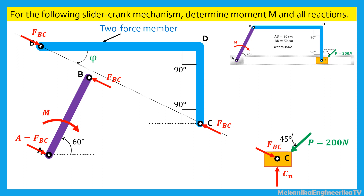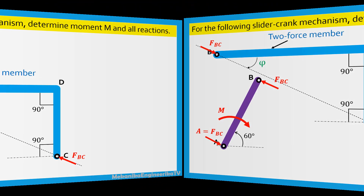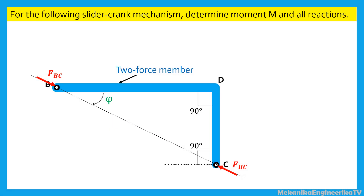We have completed the free body diagrams of the three links: bar AB, bar BDC, and slider C. Now it is possible to move on to write the equilibrium equations of these bars. For the bar BDC, the equilibrium forces and moment equations are identically satisfied.